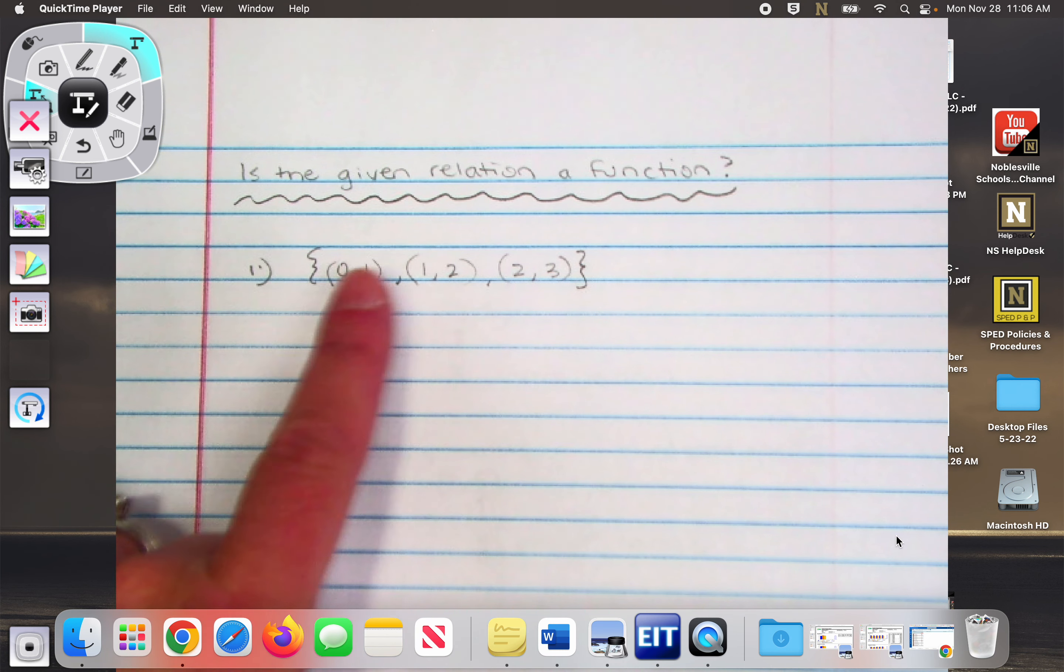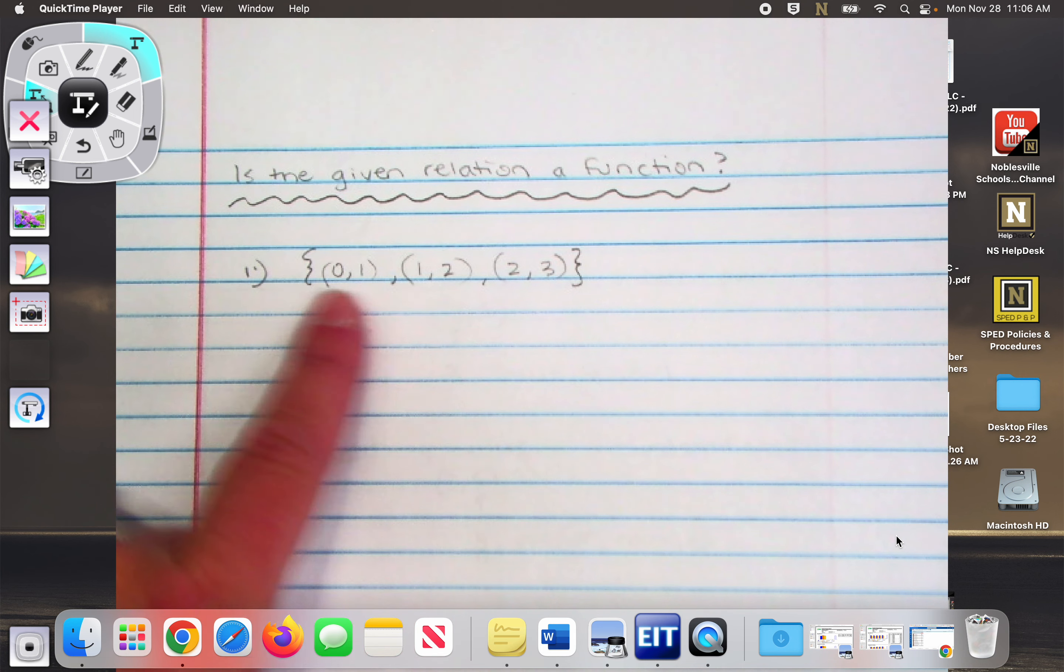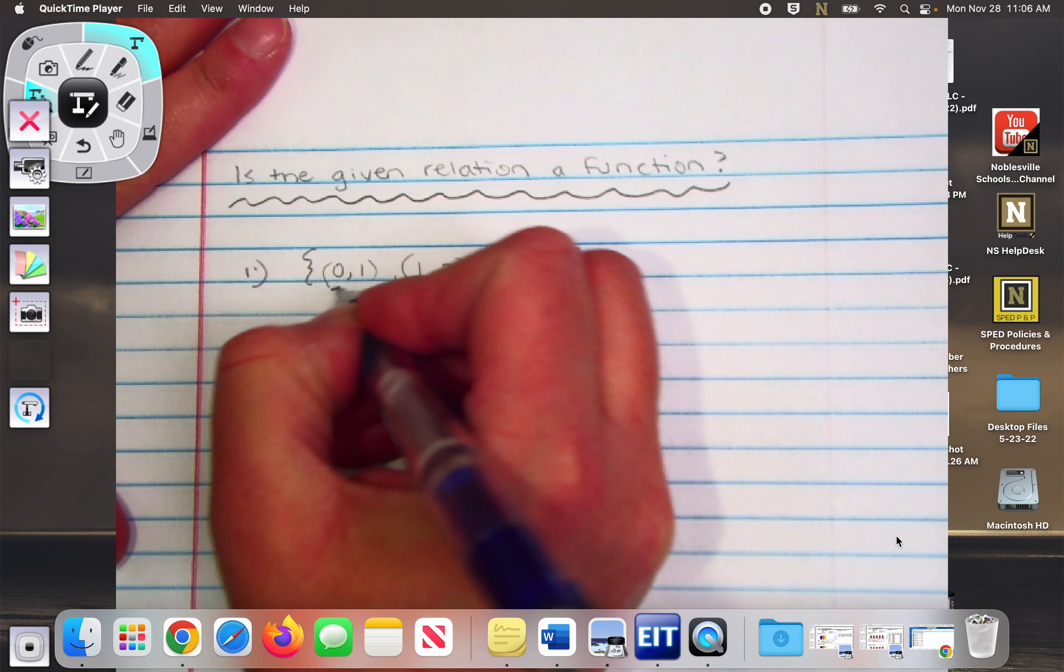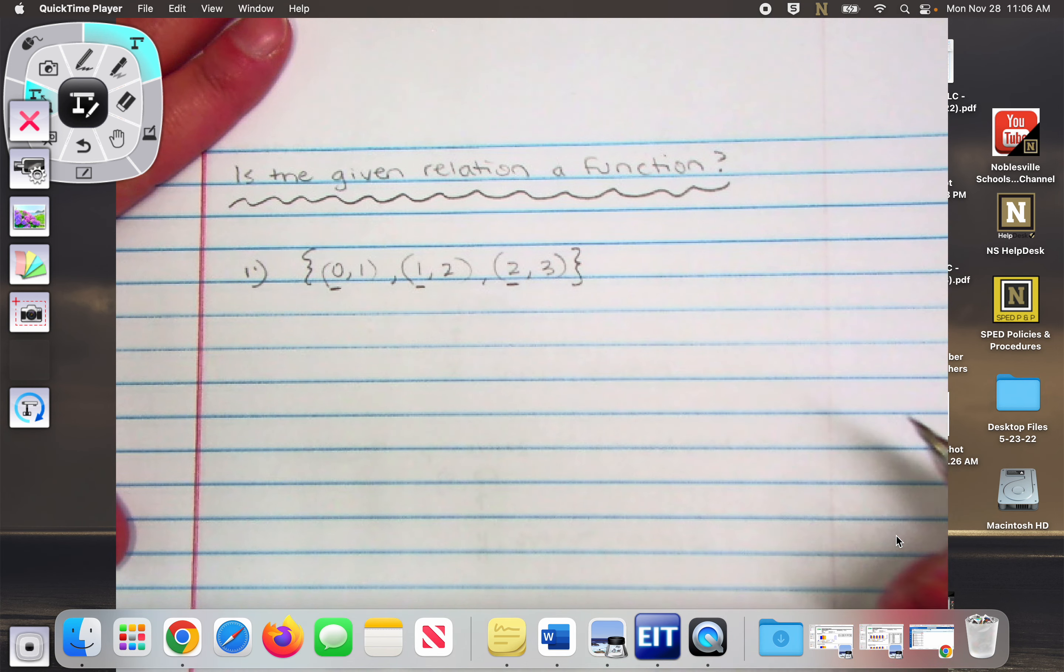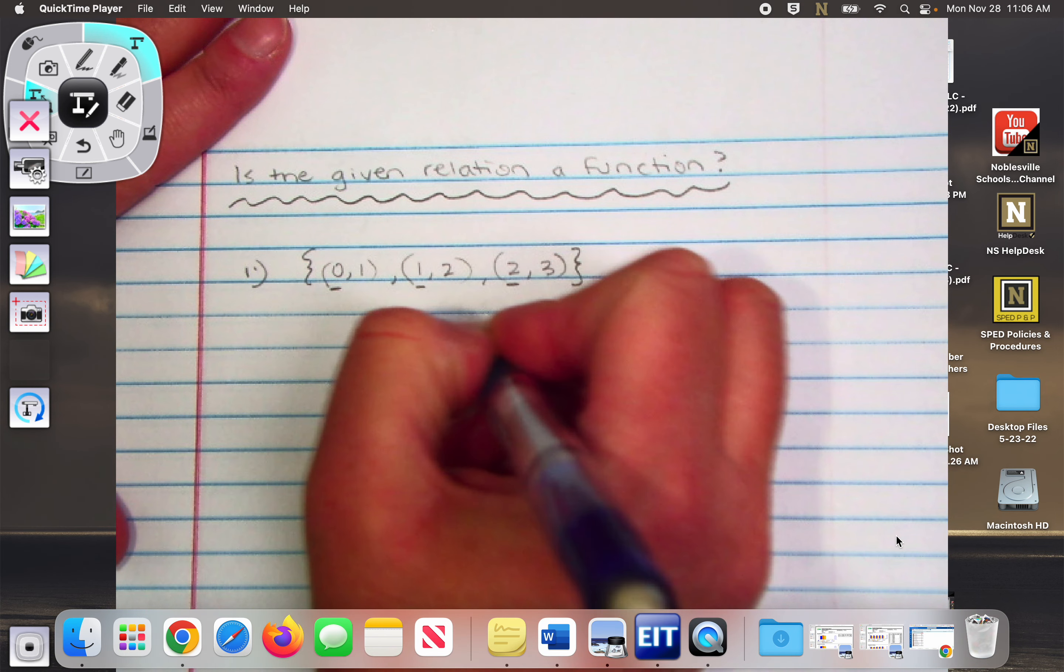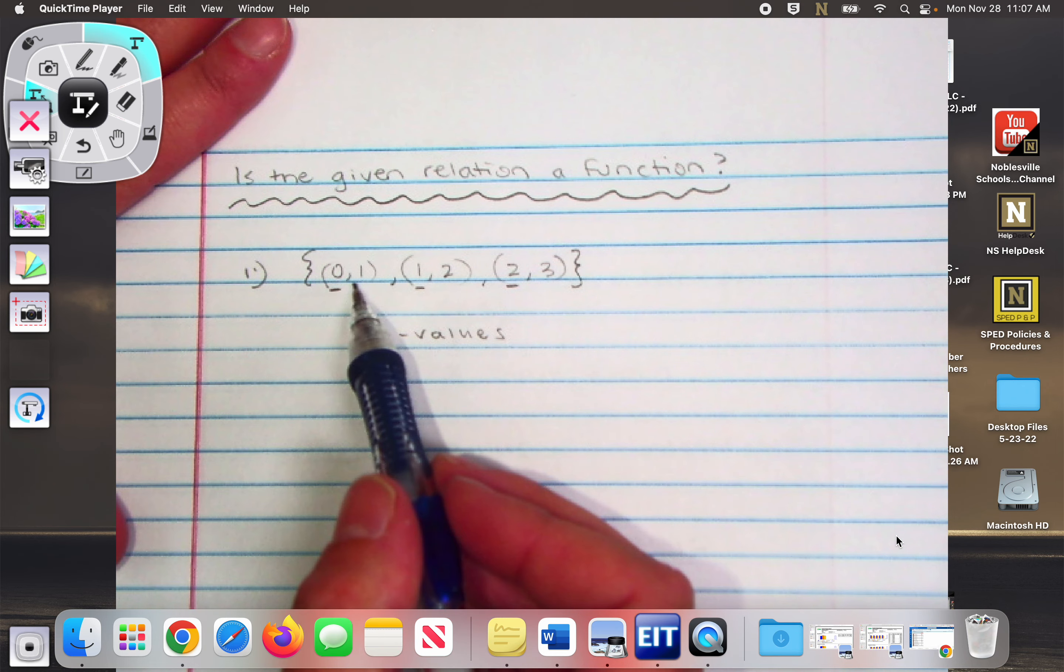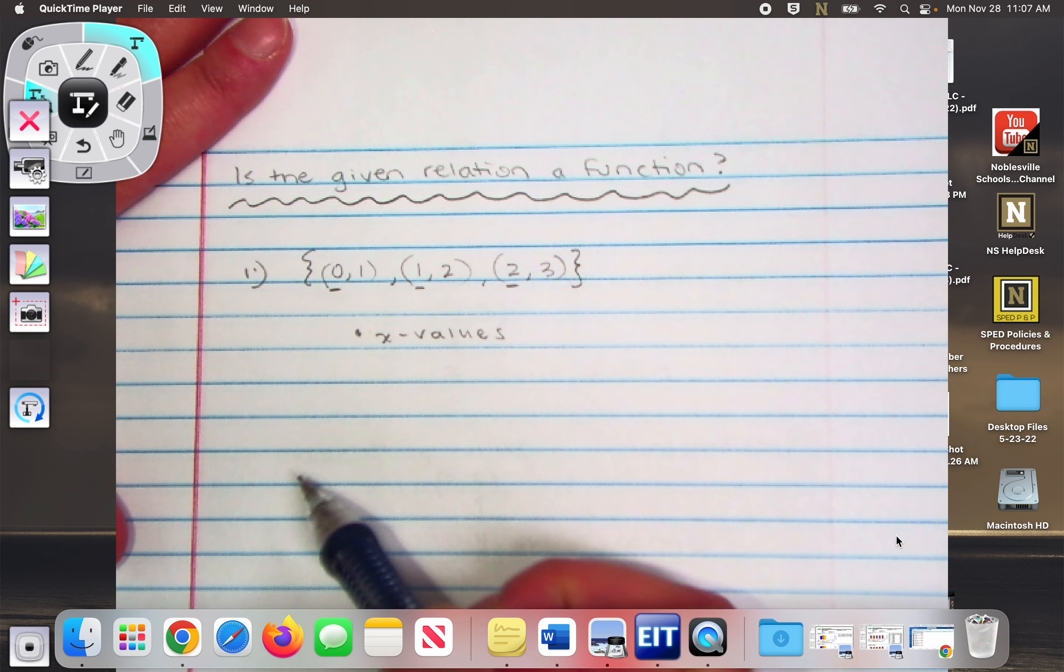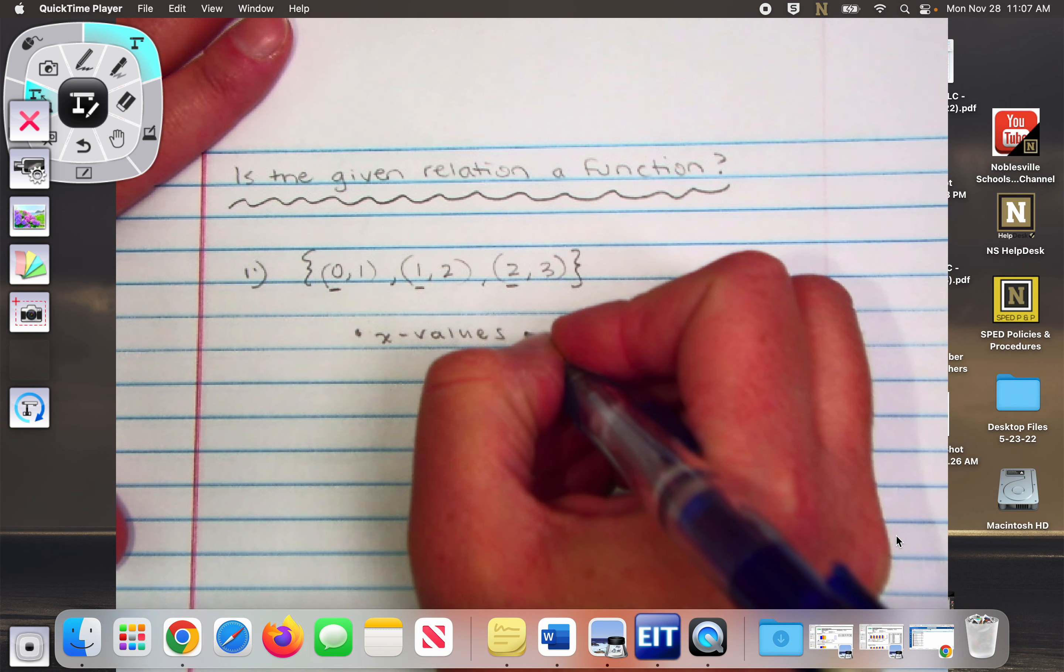Okay, so when I look at this set of ordered pairs as a relation, is it a function? Do any of the x values repeat? Hayden? They do not. So is it a function? It is. When I look at the x values, 0, 1, and 2, they do not repeat. X values do not repeat. It doesn't matter that I have a y that's also a 1 or a y that's also a 2. We're ignoring the Ys. We're only looking at the x values. So look at this.